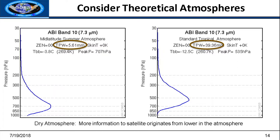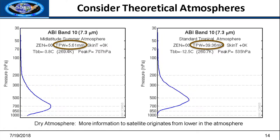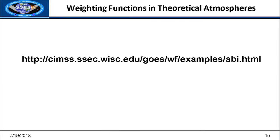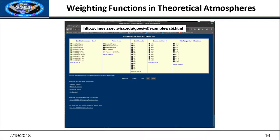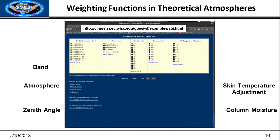As you go from the 6.1 to the 7.3, the peak level that you're sampling also changes. This is what's nice about the ABI water vapor bands 8, 9, and 10 — you're getting moisture information from different levels in the atmosphere, which is important for convective stability. You can explore this for theoretical atmospheres by changing the band, the atmosphere used, the zenith angle, the column water vapor, and the skin temperature.